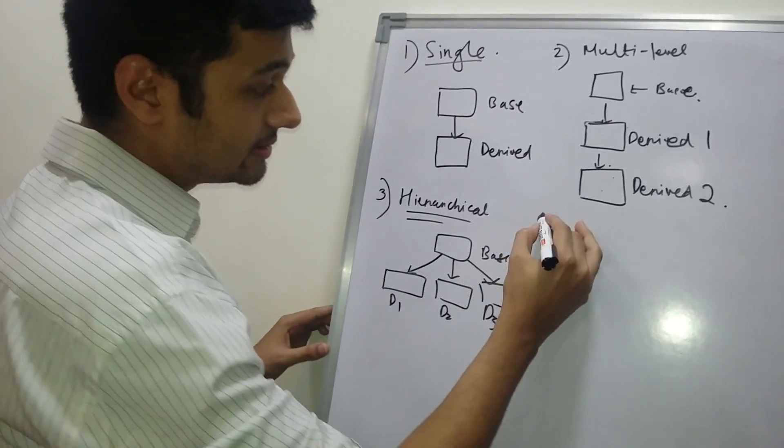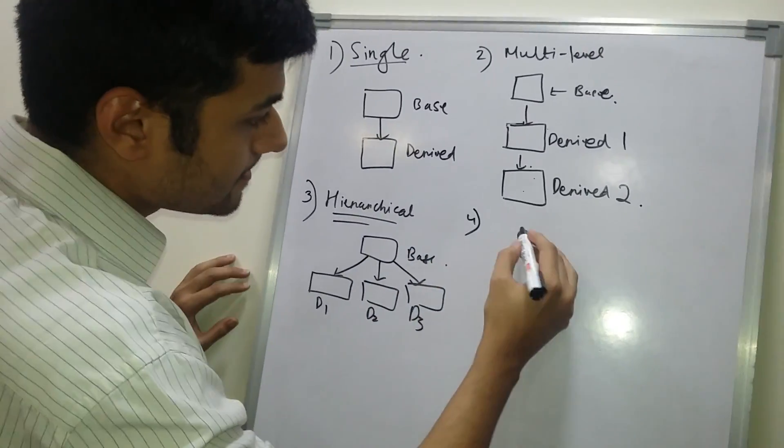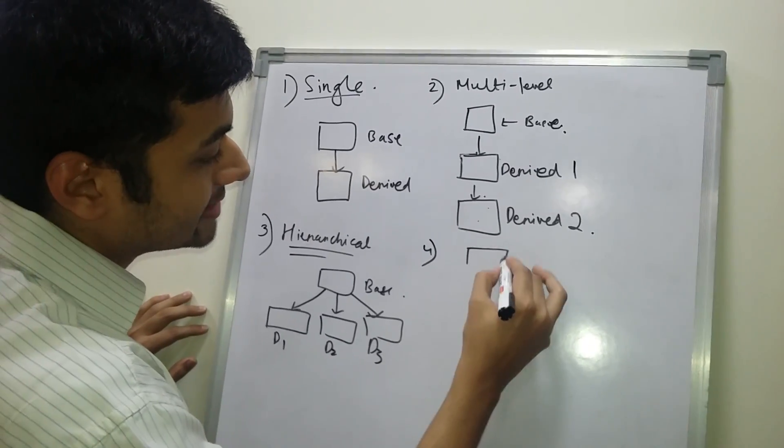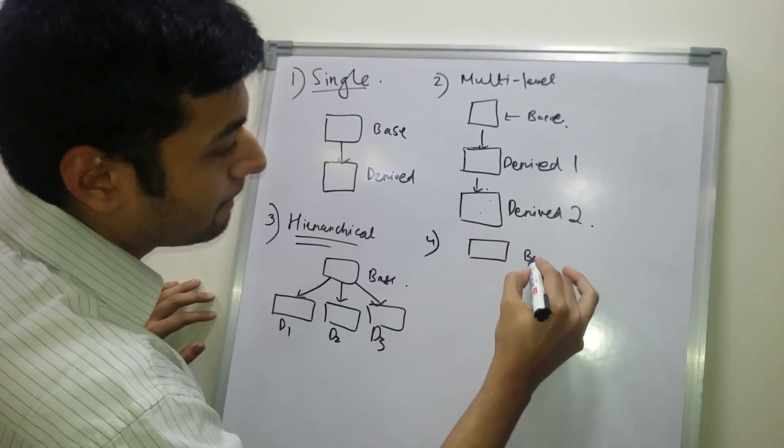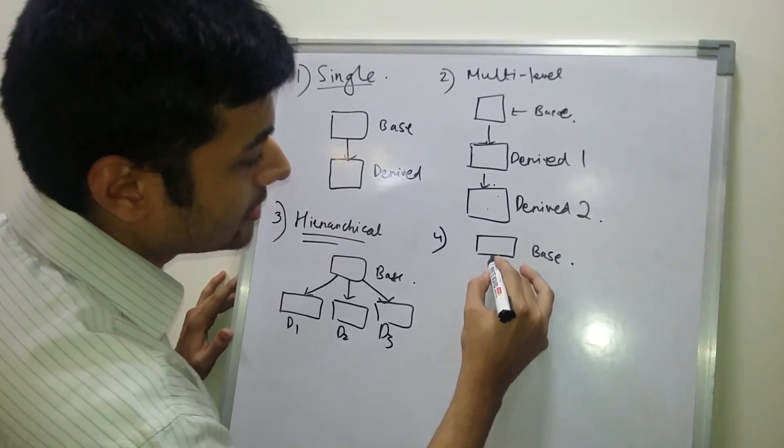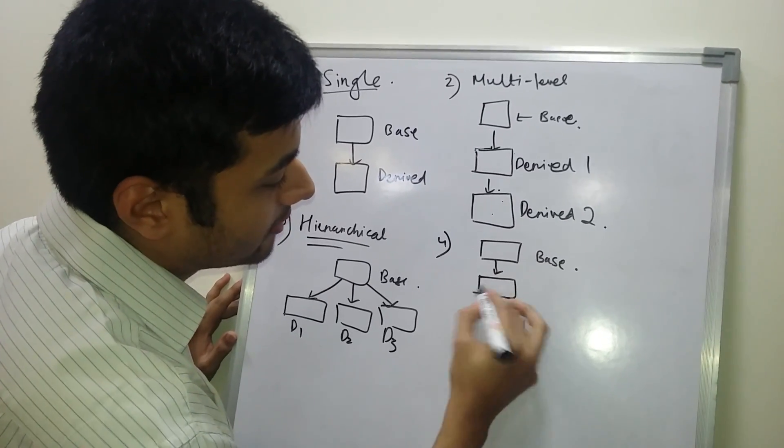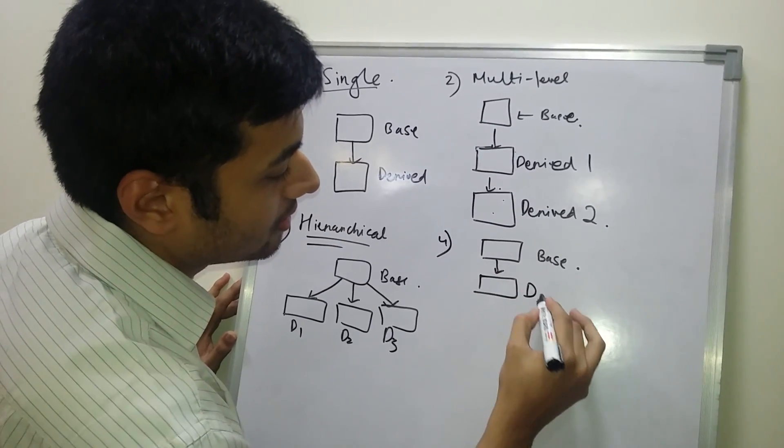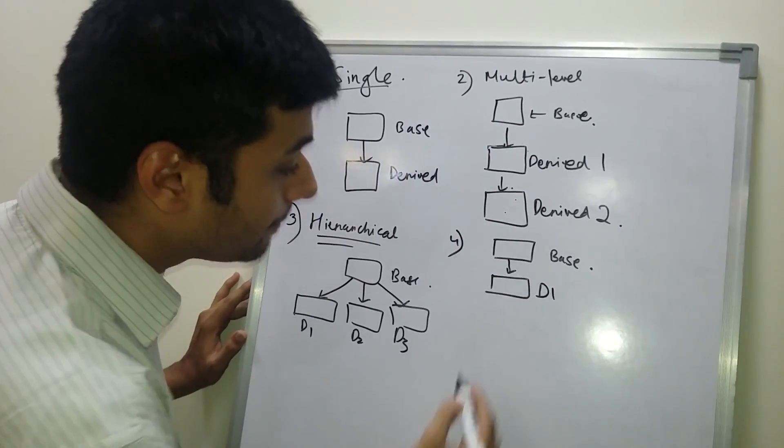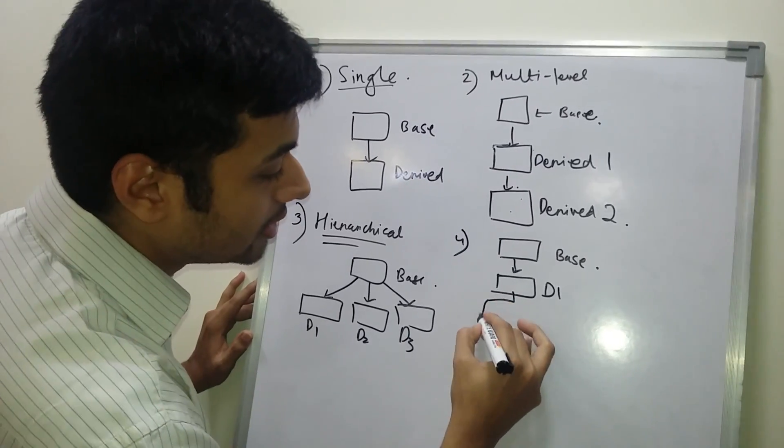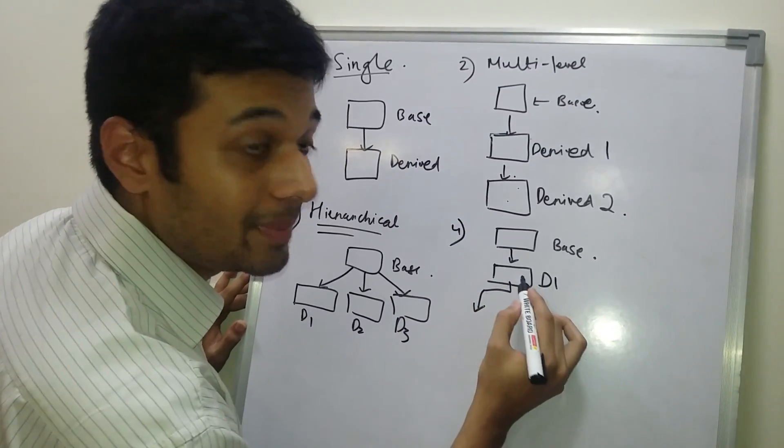The fourth one is hybrid. There is one base class, there is one derived class, we will give it a name as D1, and there are two other derived classes of this base class.